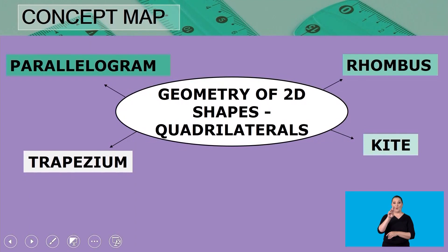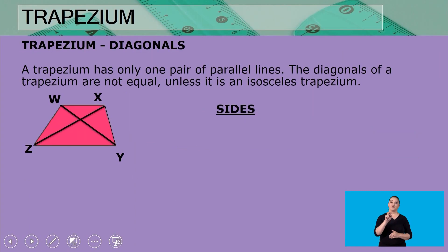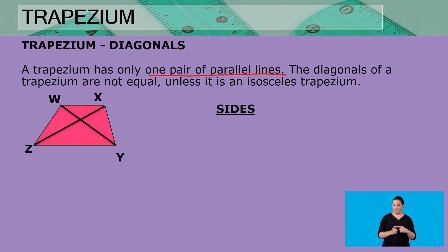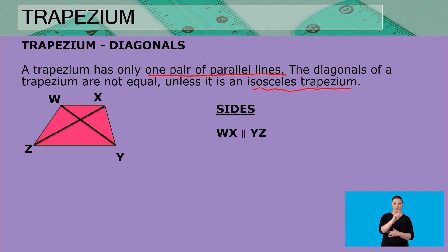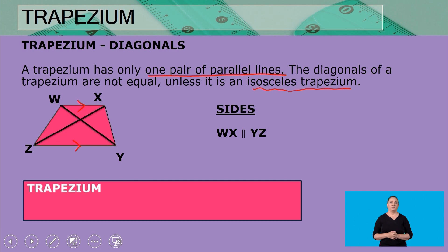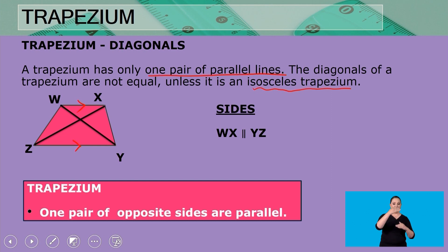Let's move on to the next concept — the trapezium. A trapezium has only one pair of parallel sides. The diagonals of a trapezium are not equal unless it is an isosceles trapezium. In this trapezium, WX is parallel to YZ — those two sides are parallel. So with a trapezium, one pair of opposite sides are parallel.